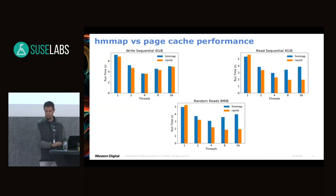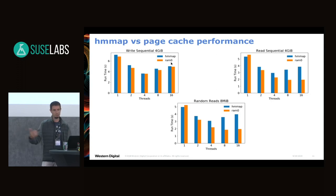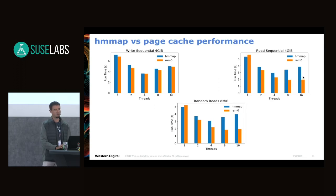Here are some microbenchmarks comparing HMMap versus using a DRAM backend directly — no separate device, just local DRAM. On writes, performance is essentially the same. On reads, there's a slight difference: we're a little better at low thread counts, but as threads increase we have some scalability issues and don't do quite as well. This holds for random accesses as well. This is more of a sanity check that things aren't too far off.